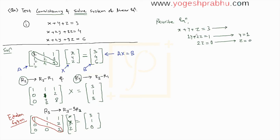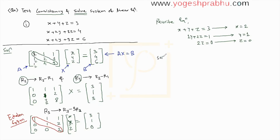Now substituting z = 0 and y = 1 into the first equation: x + 1 + 0 = 3, so x = 3 minus 1 = 2. We have found all values: x = 2, y = 1, z = 0. You can verify these satisfy all three original equations — for example, substituting into the first gives 2 + 1 + 0 = 3, which checks out. This is the solution of the system of equations.